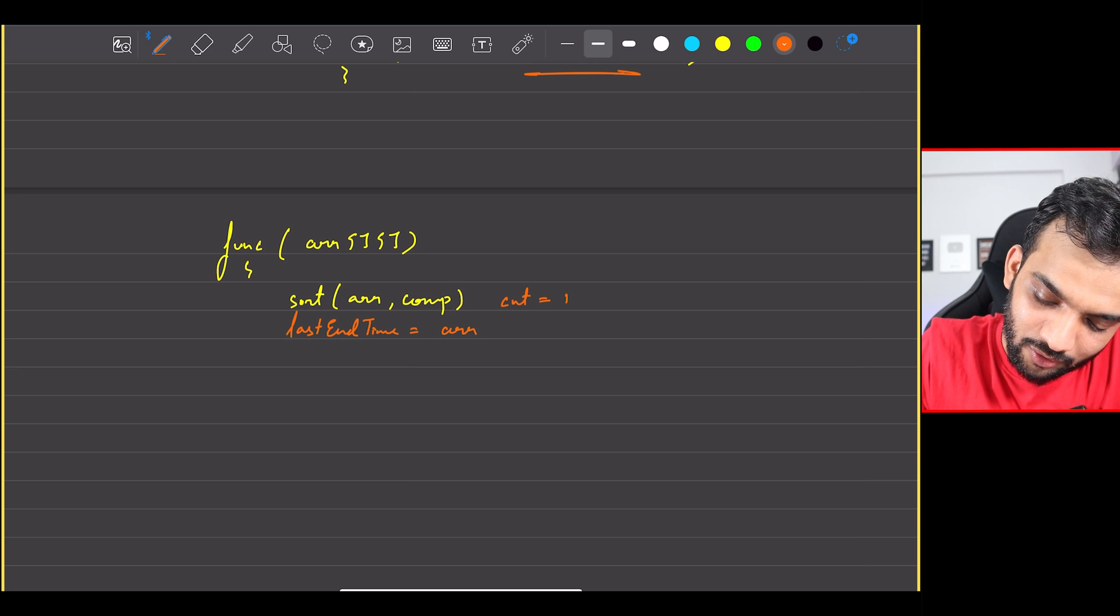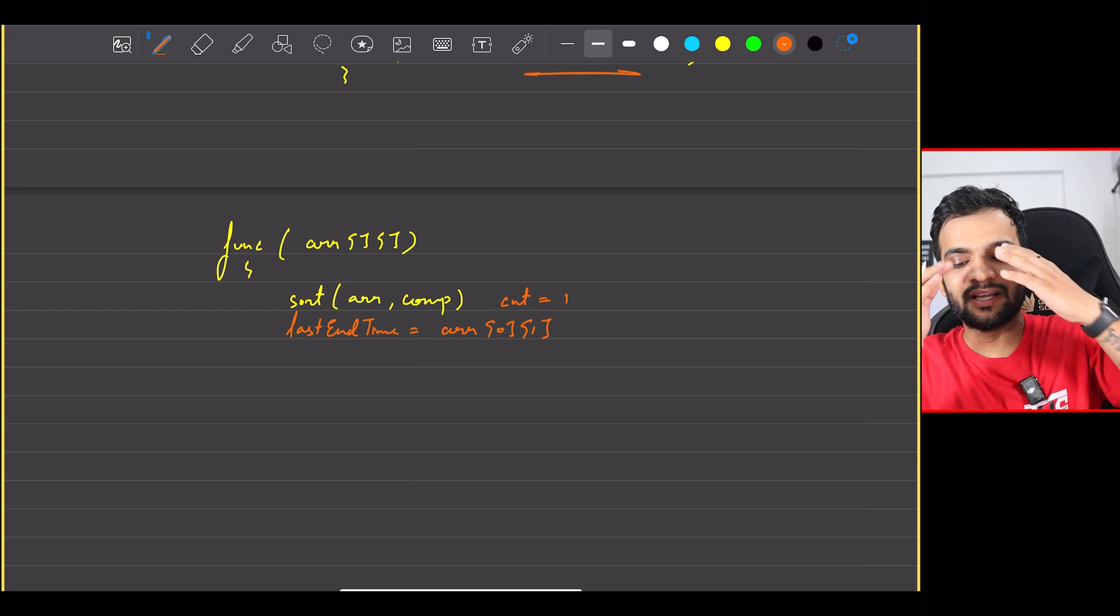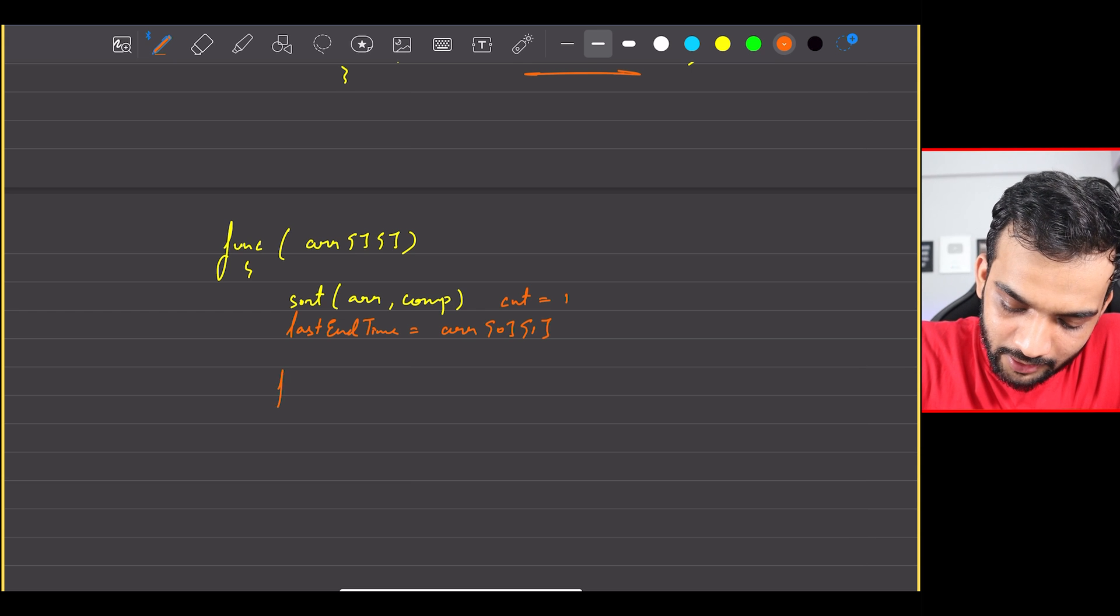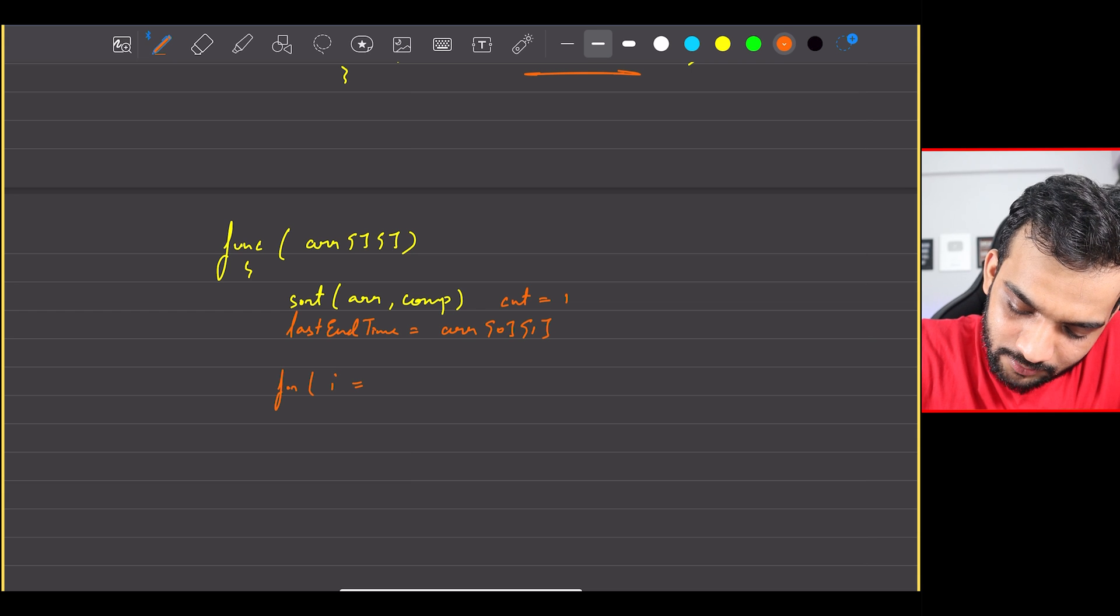And I can say the last ending time can be kept as array of the zeroth index and the ending time, because every index has two values, start and end - take the ending value. Perfect. I can start iterating from i equal to 1 and I can go until n minus 1. Very, very simple.